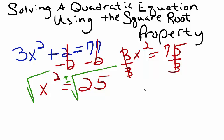Next, I'll take the square root of each term. The square root of x squared is simply x, and the square root of 25 is going to be plus or minus 5.